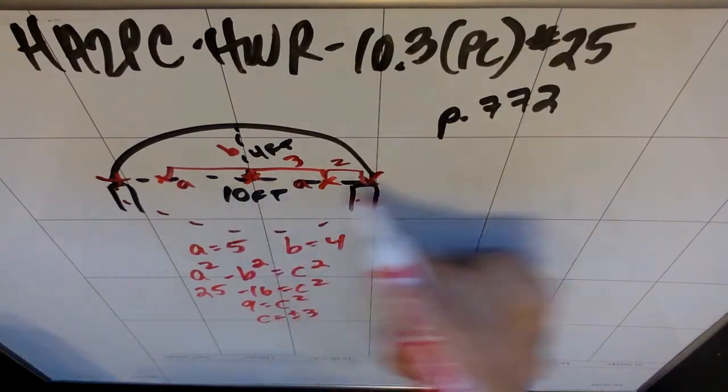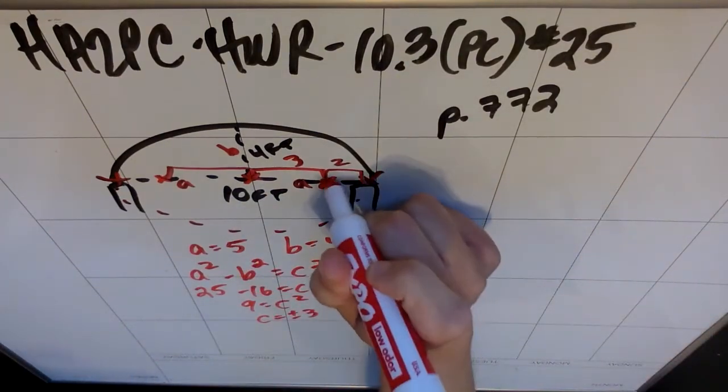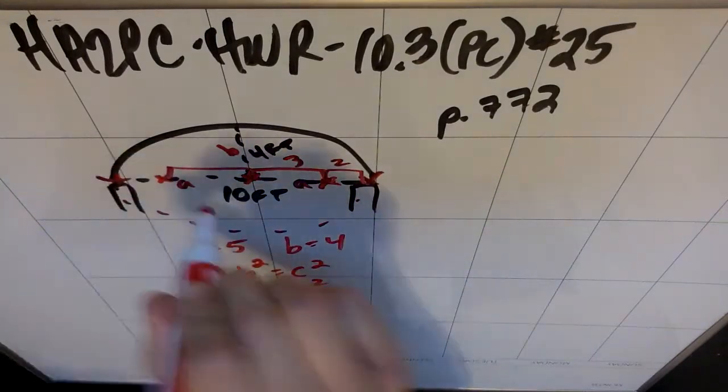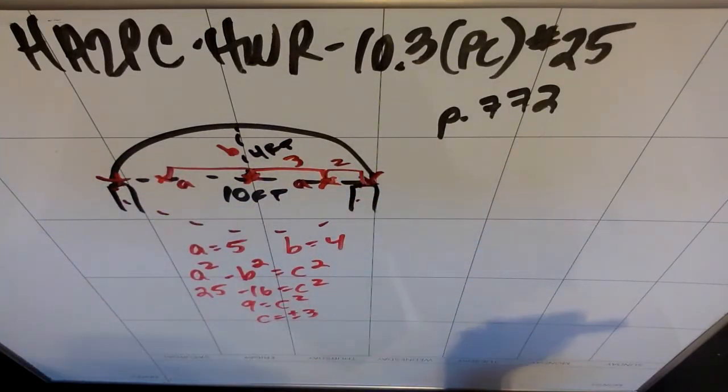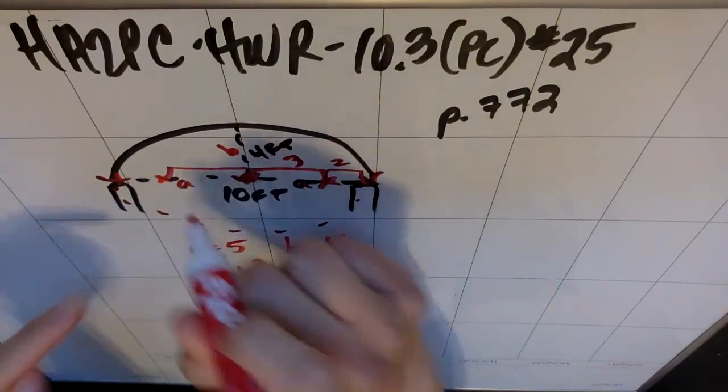So my foci should be along that center line from the top of the pillar to the other top of the pillar, and they should be 3 feet from the center.